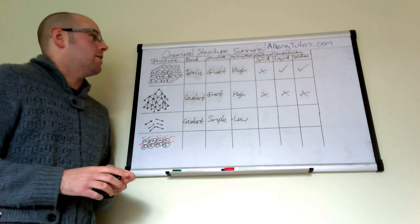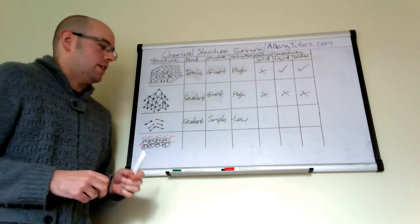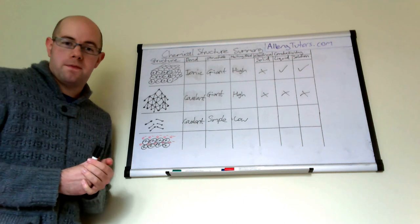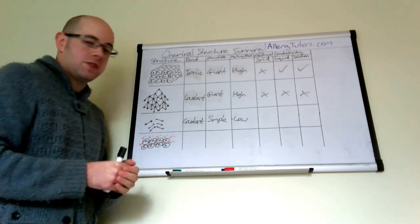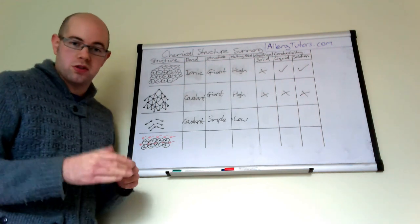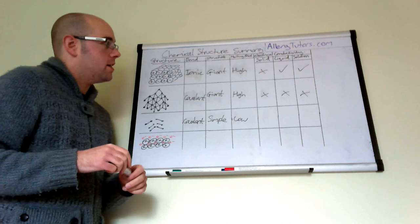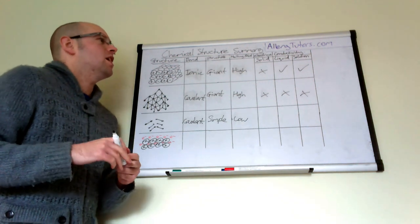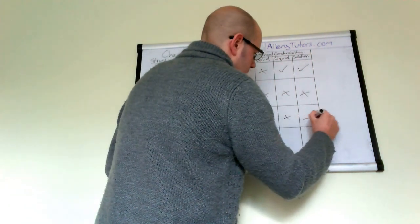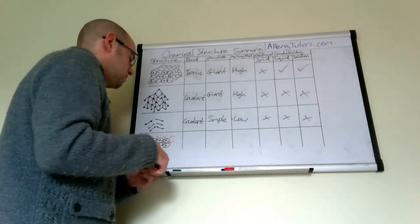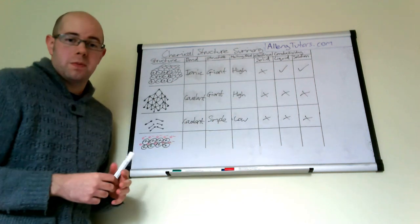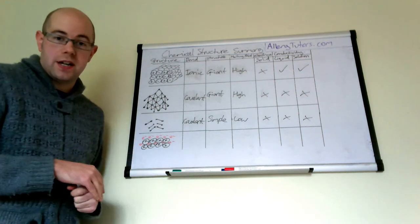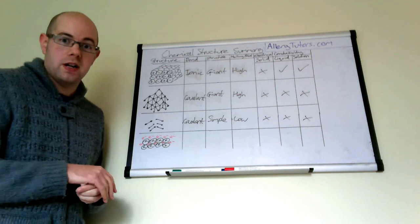Even iodine doesn't melt at room pressure — it sublimes — but you don't need a lot of heat for that. These are examples of simple molecular or simple covalent molecules. In terms of electrical conductivity, they don't conduct electricity when solid, liquid, or in solution. They may react when dissolved in solution, but they won't actually conduct electricity — they have no free electrons and no free ions because they're covalently bonded.